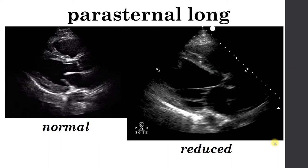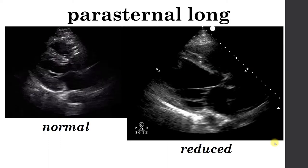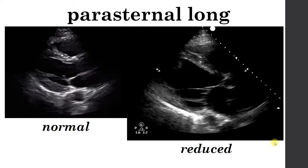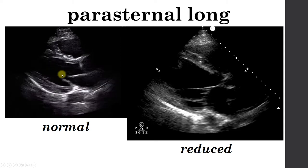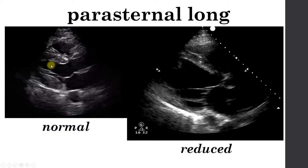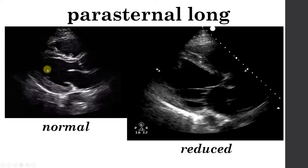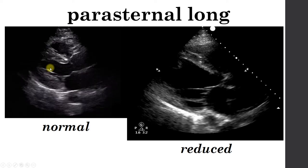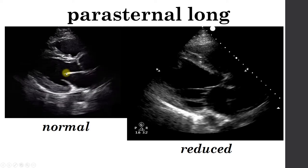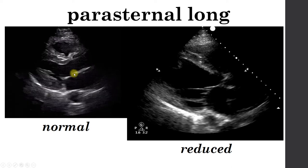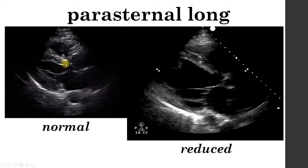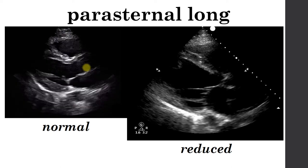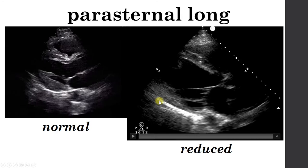Now we'll cover left ventricular function. Breaking this down into broad categories, you want to think about whether the left ventricular function is normal or reduced. Pay attention to the actual cavity of the left ventricle — the size of this cavity should decrease by about 50% every time the heart beats, which would be a normal ejection fraction. You can also look at the mitral valve, and in a normal, healthy heart the mitral valve should slap or high-five the interventricular septum. Here is an example of a patient with severe heart failure.